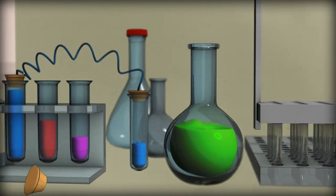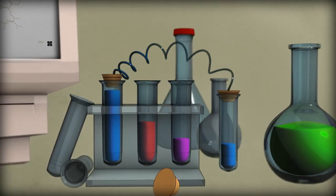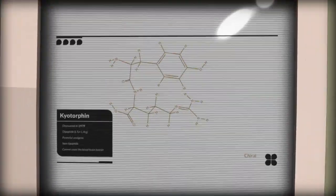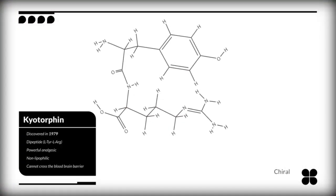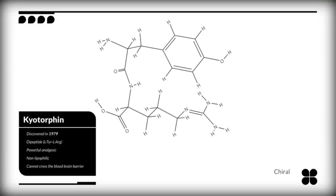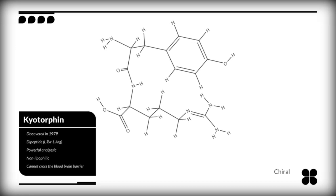Many molecules could be excellent painkillers. The problem is most cannot cross the blood-brain barrier, being unable to reach their targets. One of these molecules is the peptide kyotorphin.